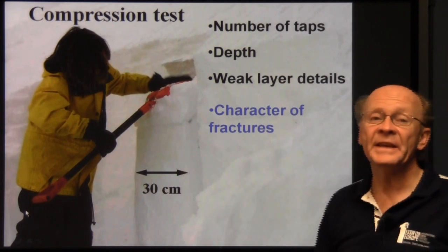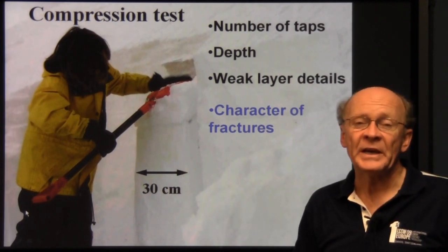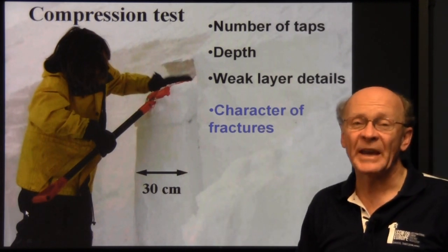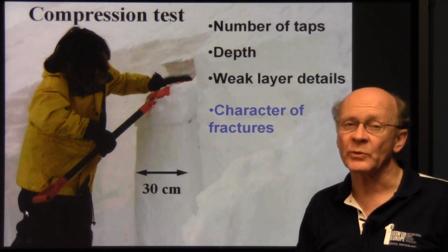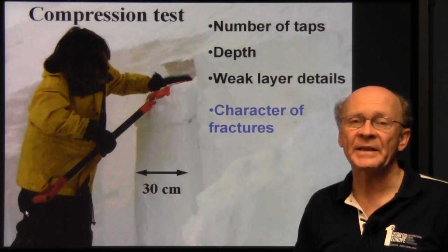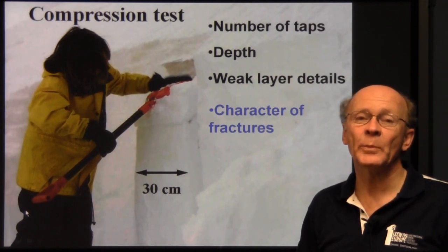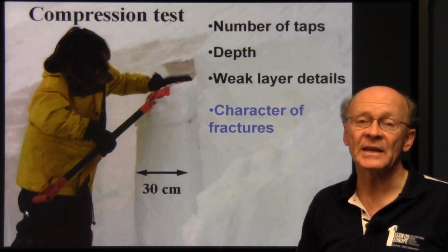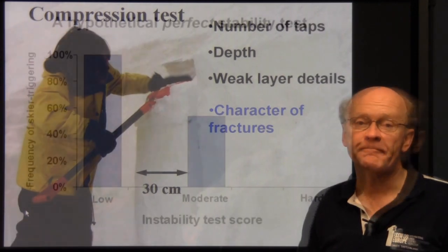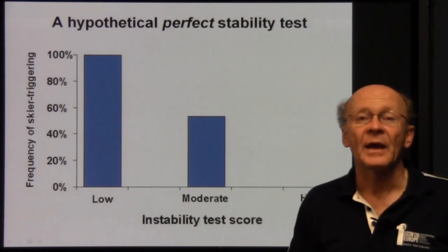The key idea in this video is: if we observe the character of the fracture — what does it look like at the instant of fracture — does that help us say whether skier triggering is likely on the adjacent slopes?